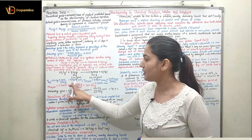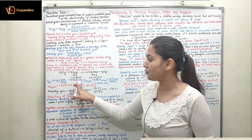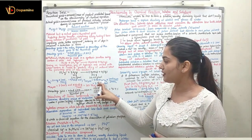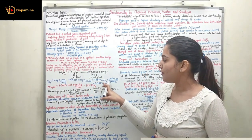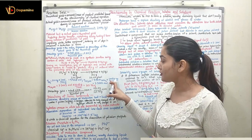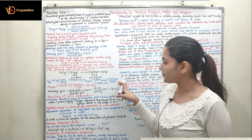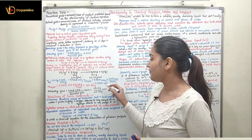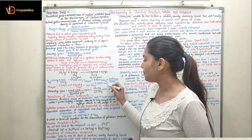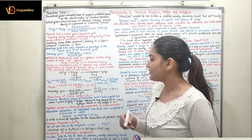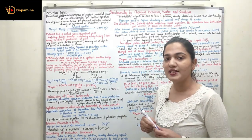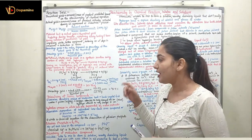We have 9.9010 mol of H2, producing 9.9010 mol H2 × (1 mol CH3OH / 3 mol H2) = 3.3003 mol of CH3OH.